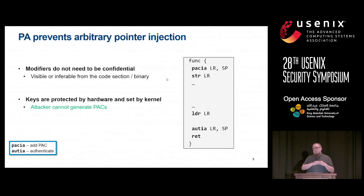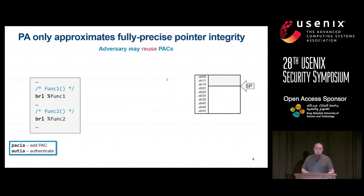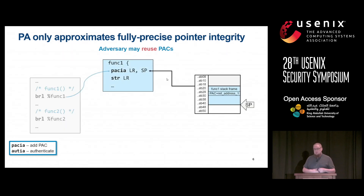A potential problem is that even though the attacker can't generate arbitrary PACs, they could potentially do a replay attack. We call these pointer reuse attacks. With two subsequent function calls, the instrumentation generates a PAC for the return address and stores it on the stack frame. The problem is that the stack pointer might not be unique — the stack naturally grows and shrinks during execution, so it can have the same value at several different times.